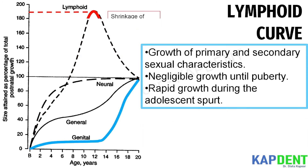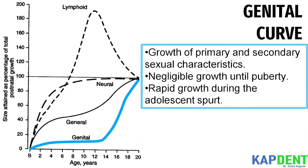Next is the genital curve, which characterizes the growth pattern of primary and secondary sexual characteristics. This shows negligible growth until puberty, after which the genital tissues experience extremely rapid growth and maturation during the adolescent spurt.